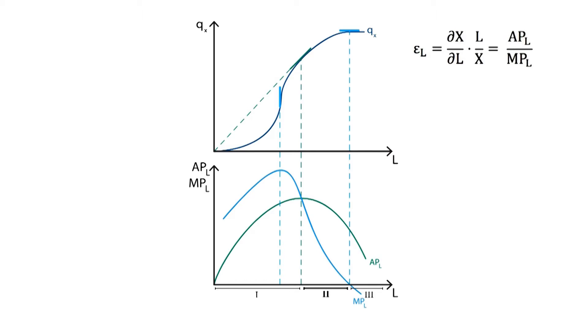In Phase 2, output elasticity is between 0 and 1, indicating decreasing returns to scale.